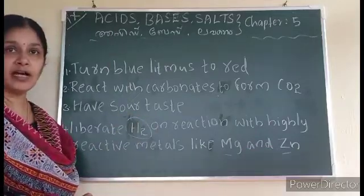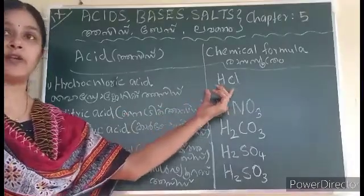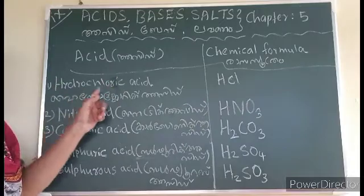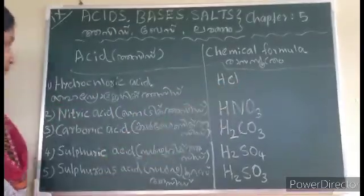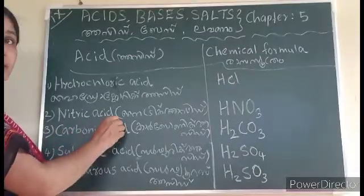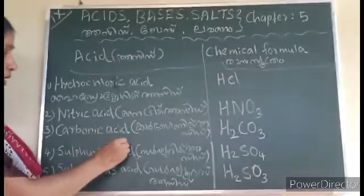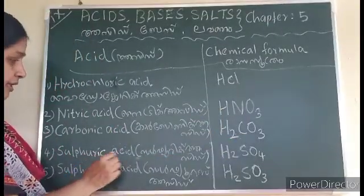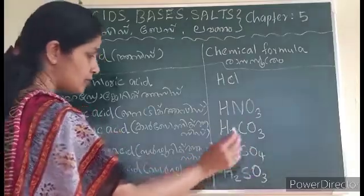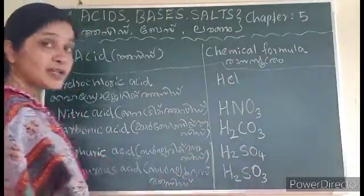The chemical formulas of common acids: hydrochloric acid — HCl; nitric acid — HNO3; carbonic acid — H2CO3; sulfuric acid — H2SO4; sulfurous acid — H2SO3.